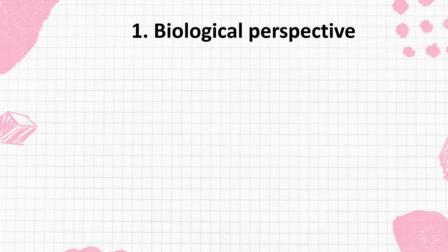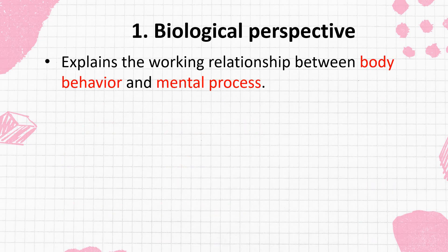The first perspective is the biological perspective. This covers the body, behavior, and mental process — the working relationship found in your body. In your body there are different hormones and nerve cells. These hormones and nerve cells are controlled by your body, and so your mental process is different. Your thinking and decision making are different, and so your behavior is different. This whole relationship can be explained from a biological perspective.